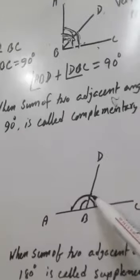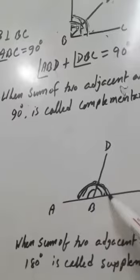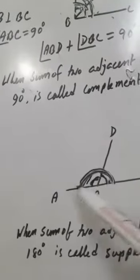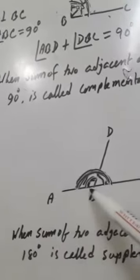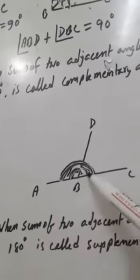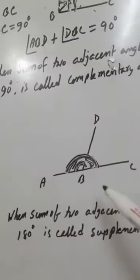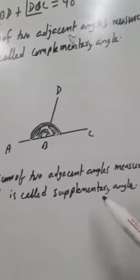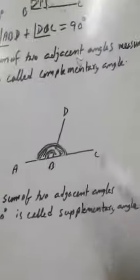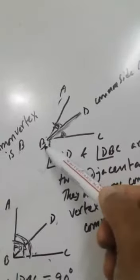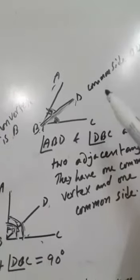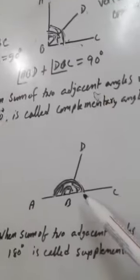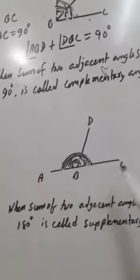Here are also two adjacent angles, and this plus this equals 180 degrees — one straight angle is 180 degrees. Angle ABD and angle DBC together sum to 180 degrees. When the sum of two adjacent angles measures 180 degrees, they are called supplementary angles. So: adjacent angles share a common vertex and common side; when two adjacent angles measure 90 degrees it is a complementary angle; and when they measure 180 degrees it is a supplementary angle.